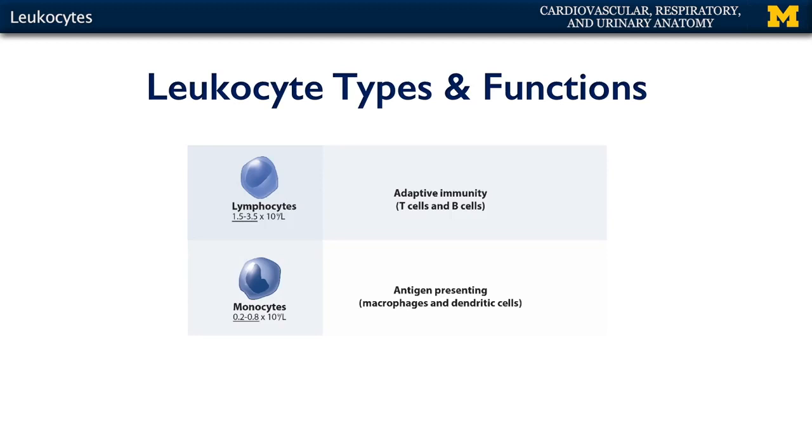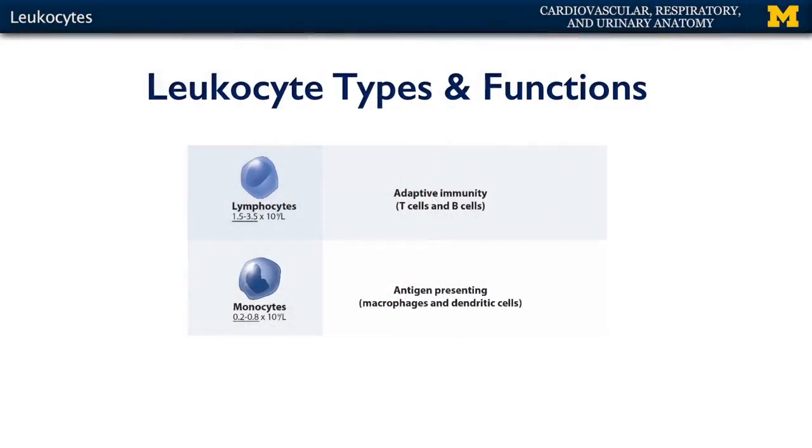The agranular leukocytes, in terms of large-scale categories, are the lymphocytes and the monocytes. The lymphocytes are involved in adaptive immunity — when an individual has an experience with an antigen, becomes primed to deal with it, and then dispatches it via T cells and B cells. Monocytes involve antigen-presenting cells such as macrophages and dendritic cells. These cells are capable of phagocytosis: they engulf a pathogen, digest it within, put pieces of that pathogen up on major histocompatibility complexes on the surface of the cell, and present that to other elements of the immune system such as T cells and B cells for an adaptive response.